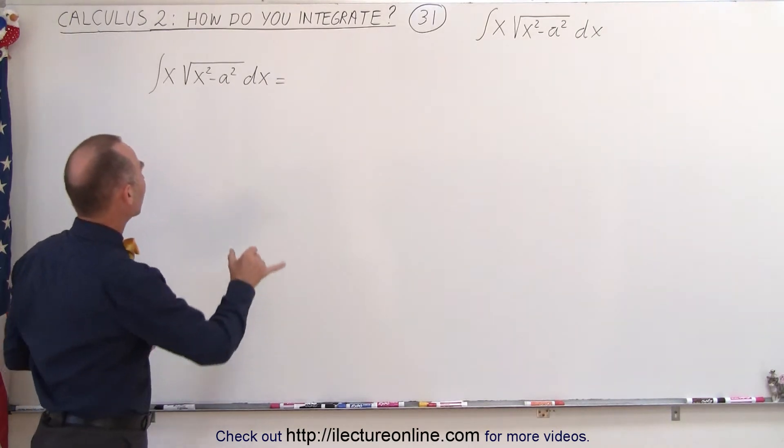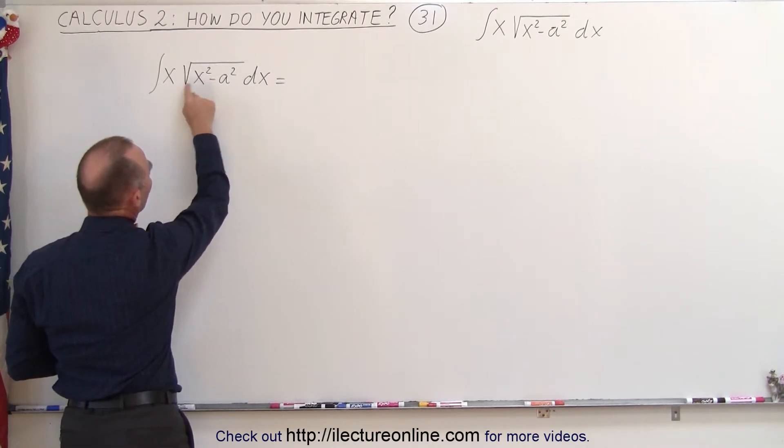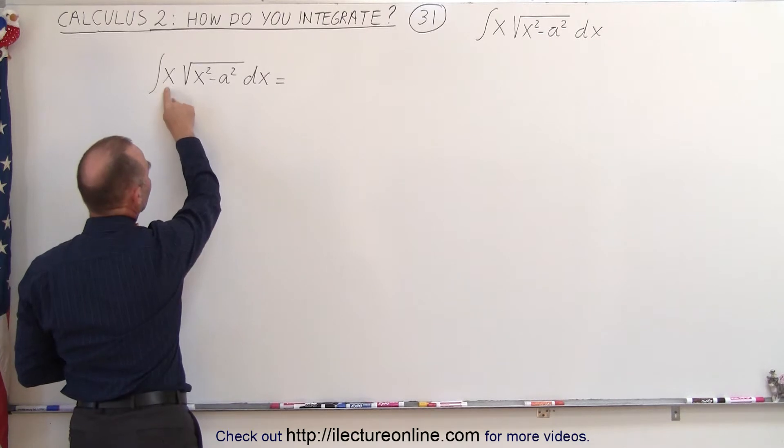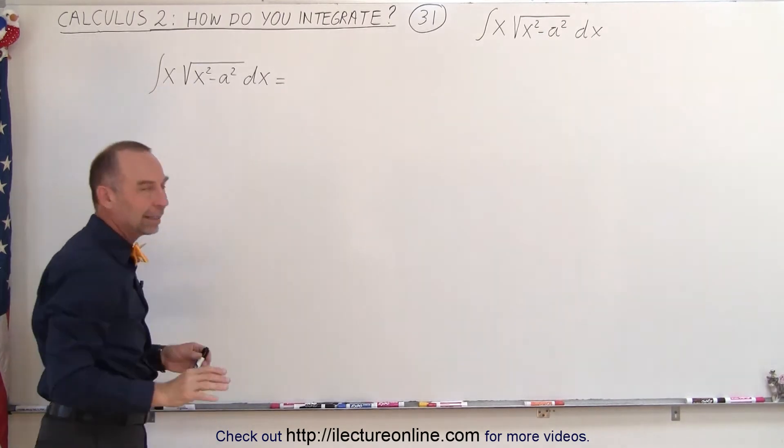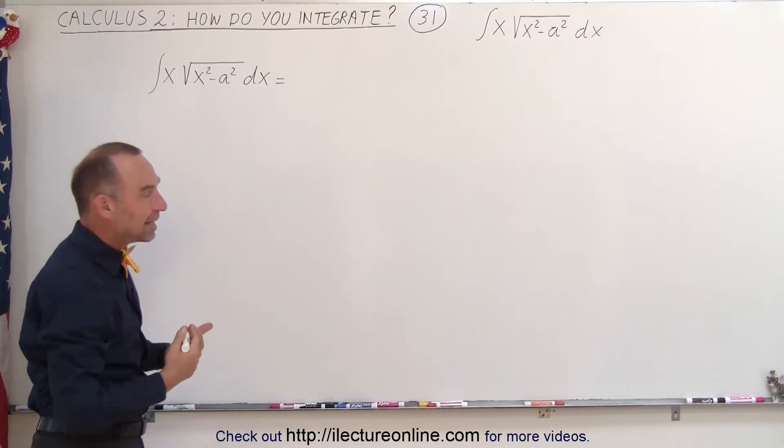What we need to realize here is that when we have the square root of x squared minus a squared in the numerator, we need a proper differential. So here we have an x dx, where in essence we need a 2x dx in order to integrate it, and you'll see in just a moment why I say that. So we're going to use the technique of substitution.